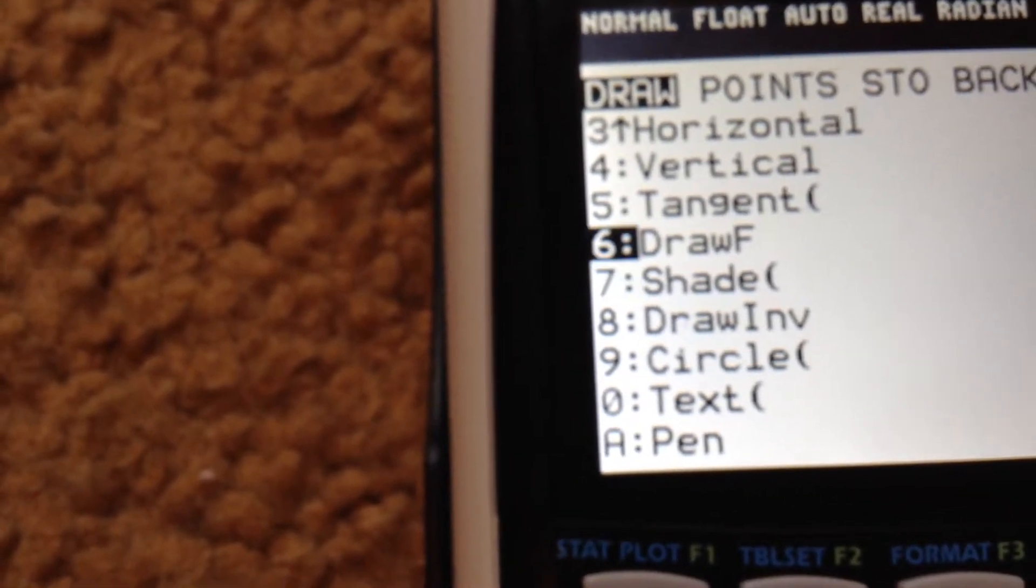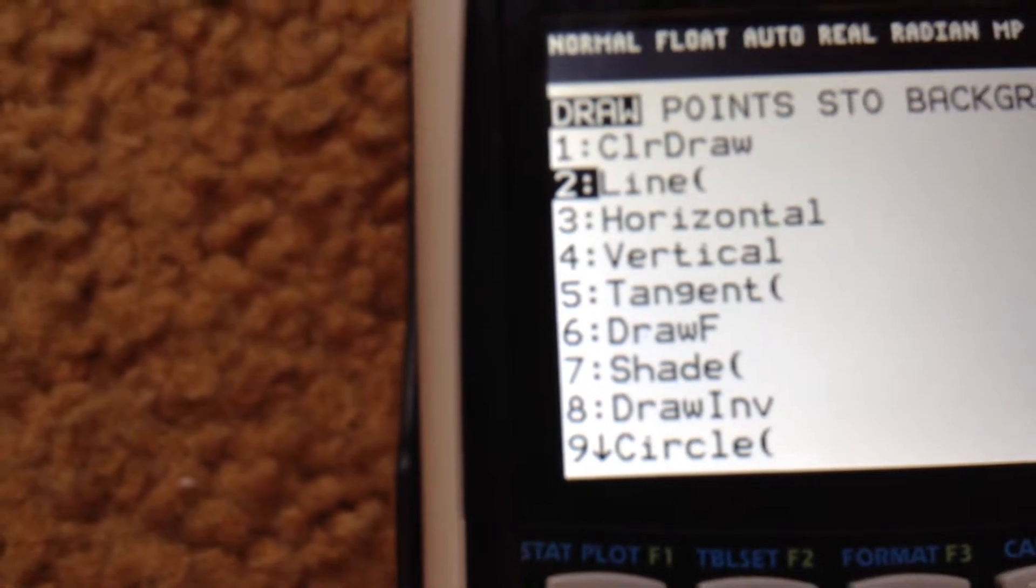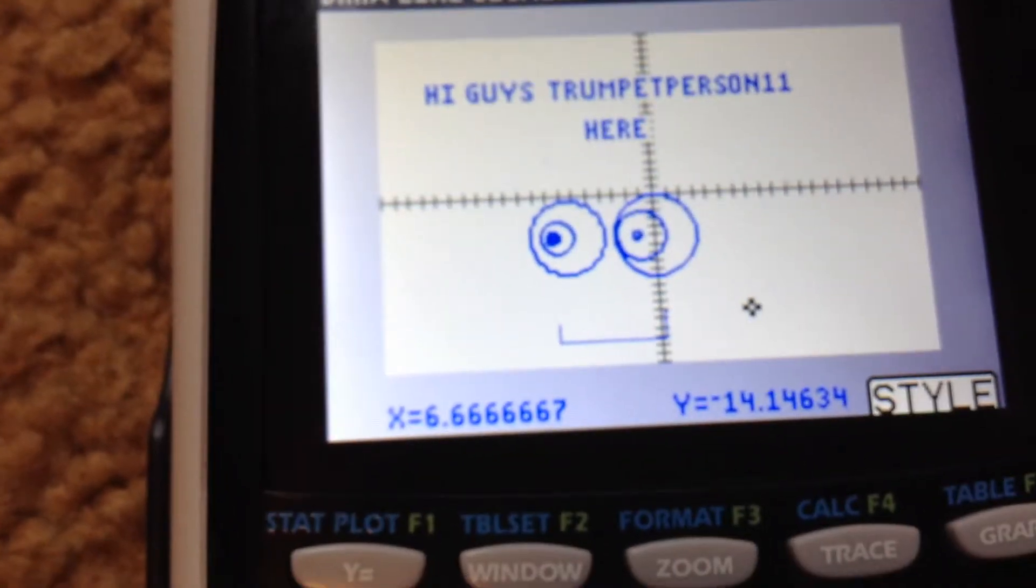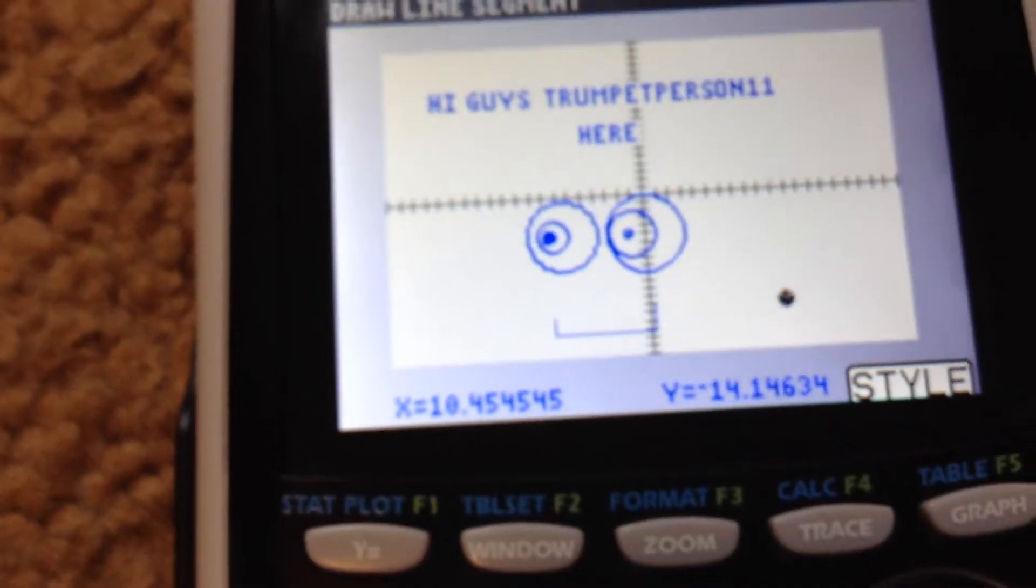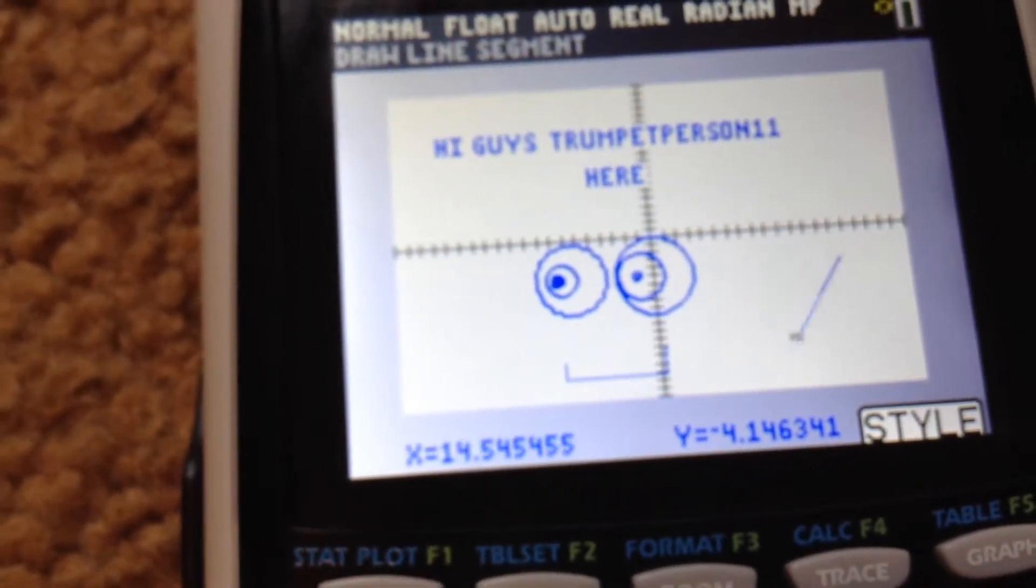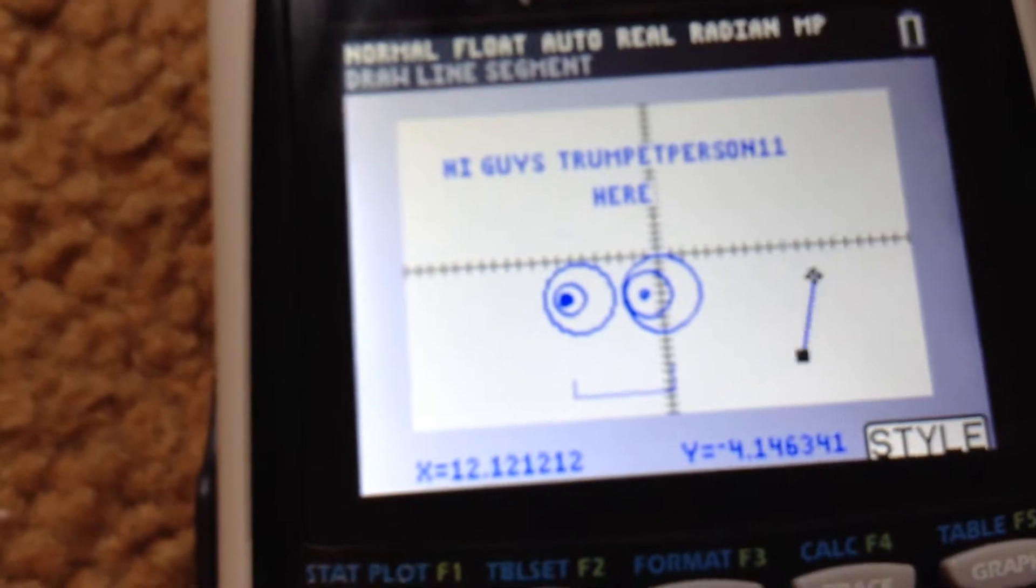For line, you press enter, and then you can go across and make diagonal lines and stuff. It's pretty cool.